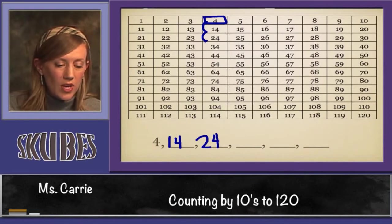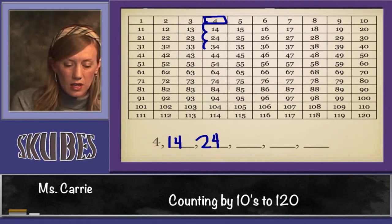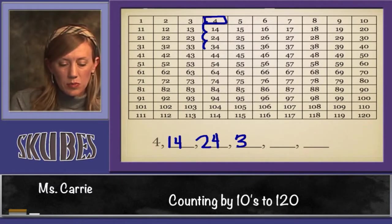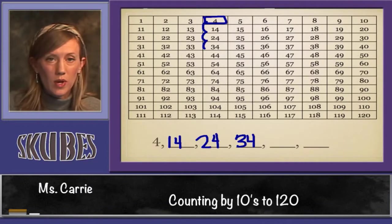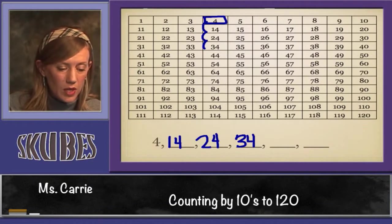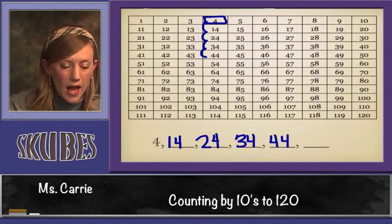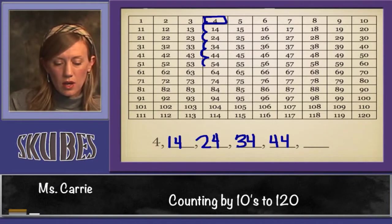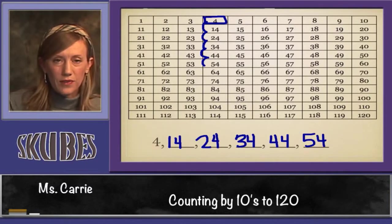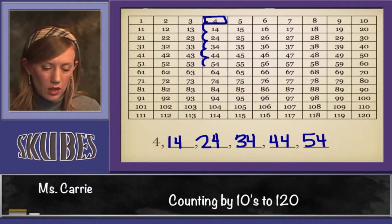Every time we add 10, the tens place goes up one, but the ones place stays the same. We go to 34, now we're at 44, and if we want to add 10 more, now we're at 54.